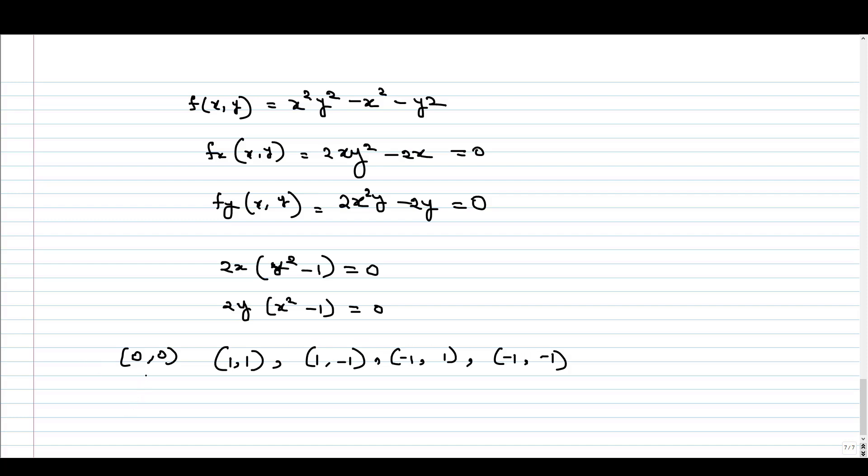Now, we will go to GeoGebra to find out whether these points are maxima, minima, or saddle points. We will find that (0,0) is a local maxima, and all the other 4 points are saddle points. Let us go to GeoGebra and verify this.